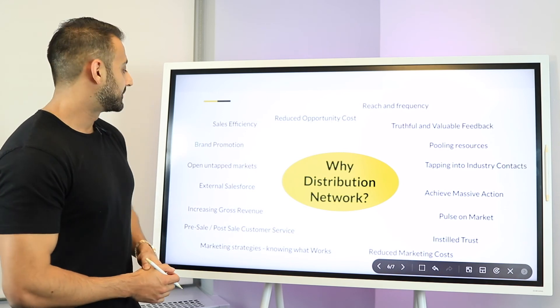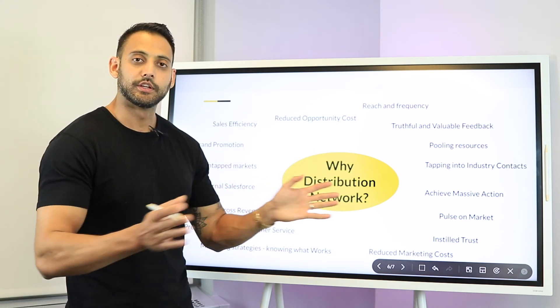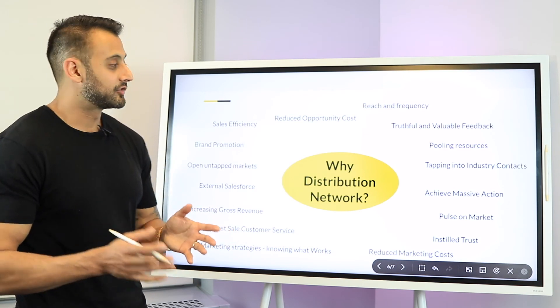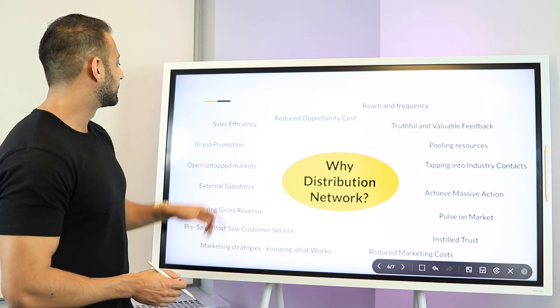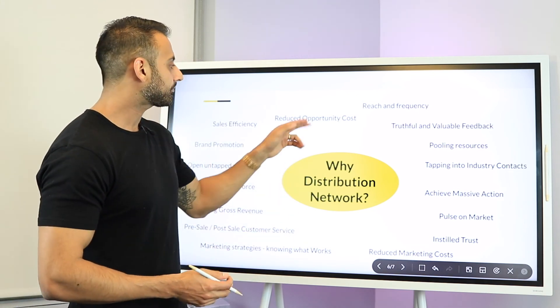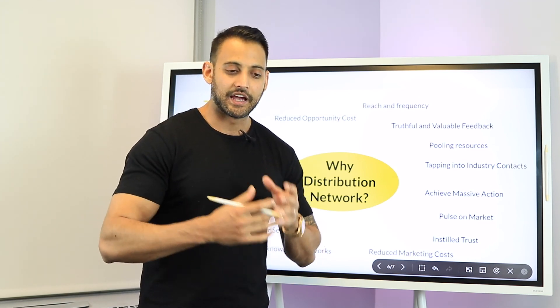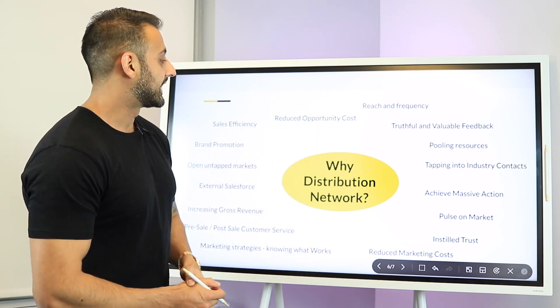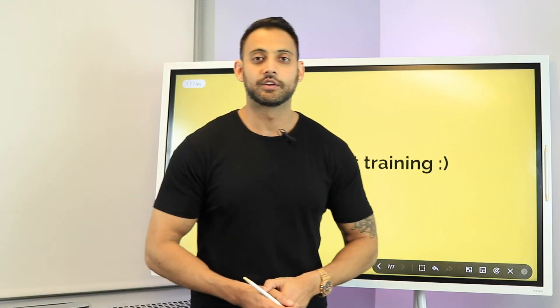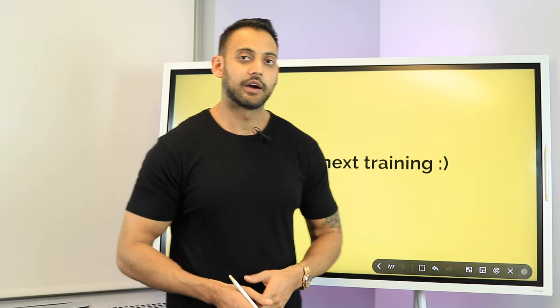You're using external sales forces, not internal. Untapped markets, as I explained. Brand promotion — they're propping your brand up in a way you couldn't have done alone. If you're a small business, there's no way you could achieve that kind of awareness at such an early stage. And the efficiency of that whole sales process becomes very efficient because it's reducing your opportunity cost — how much time and money it costs you to have something executed well. That is the reason why we love distribution networks, why they work, and why I've used them from day one. I'll show you that now in the next section.